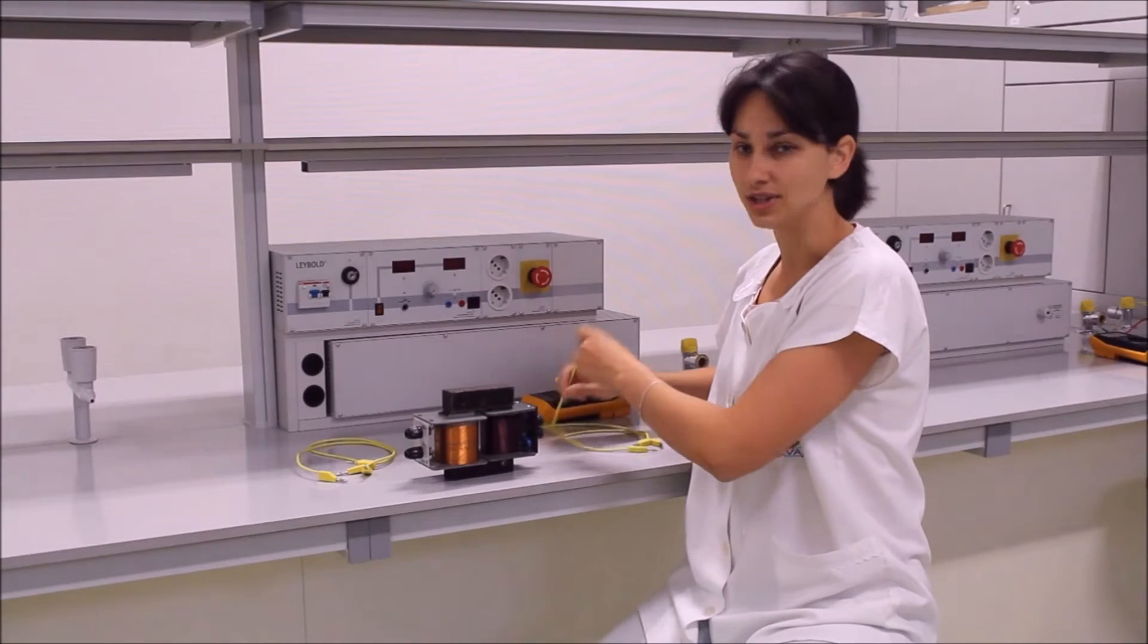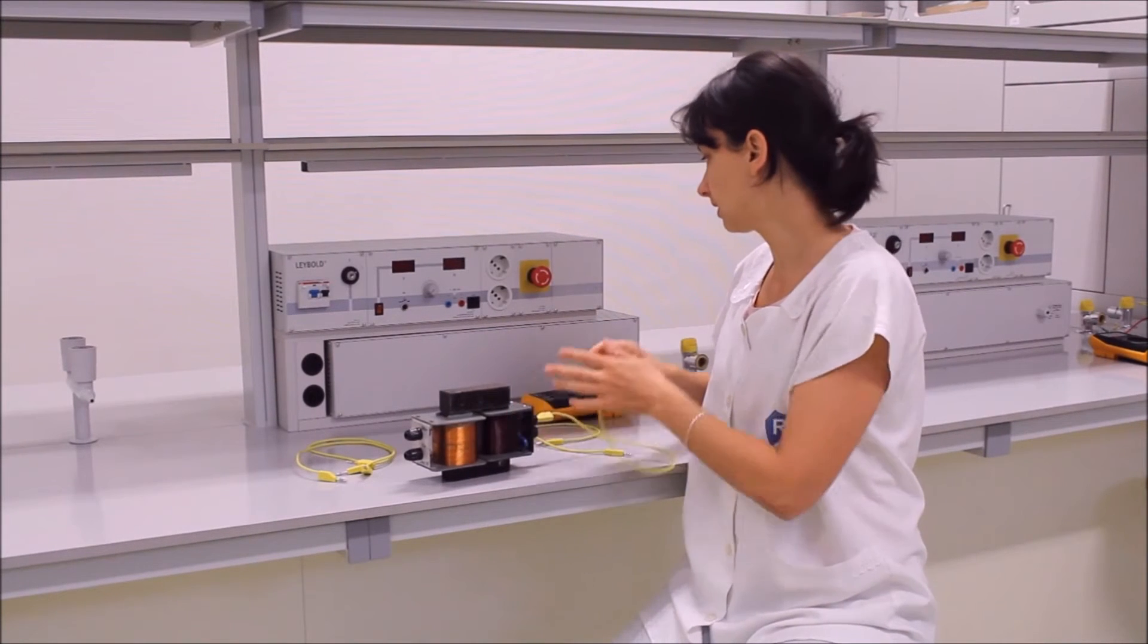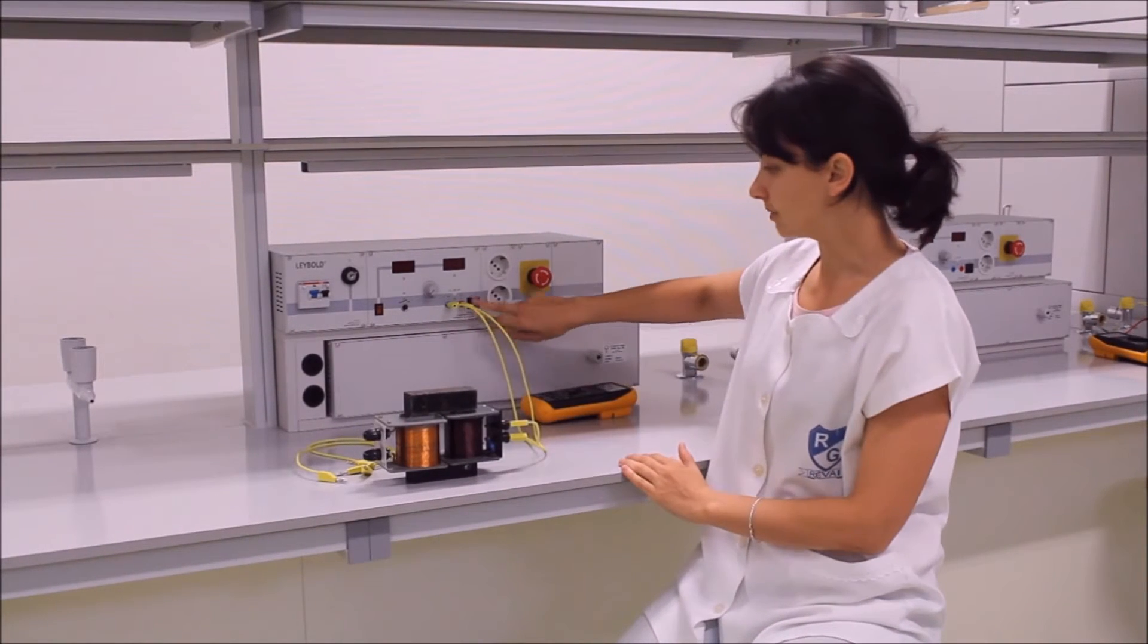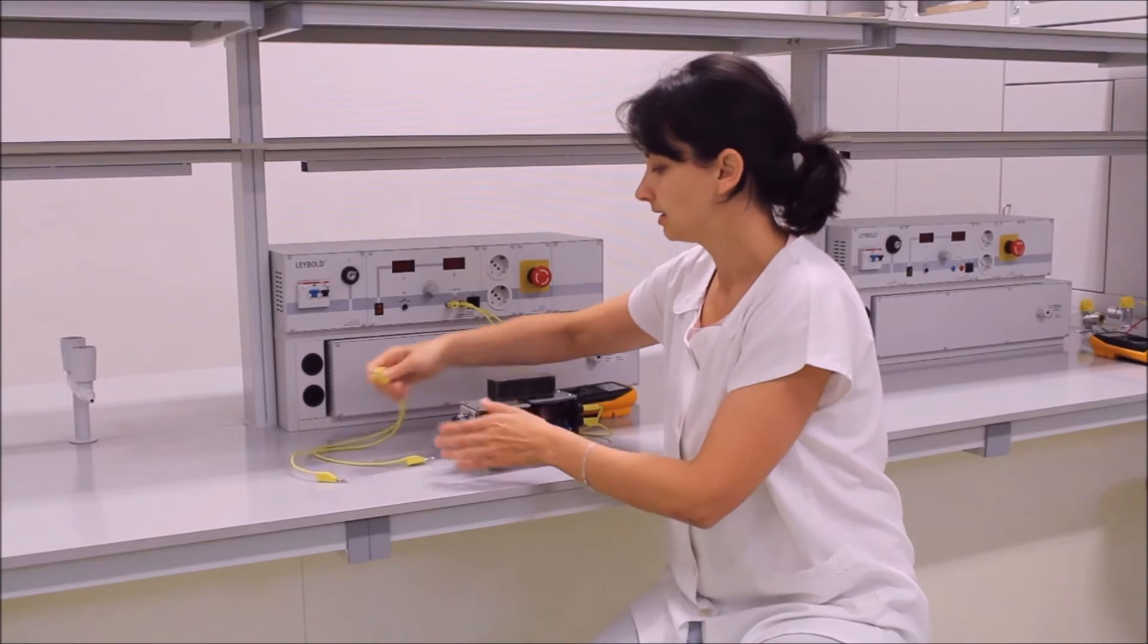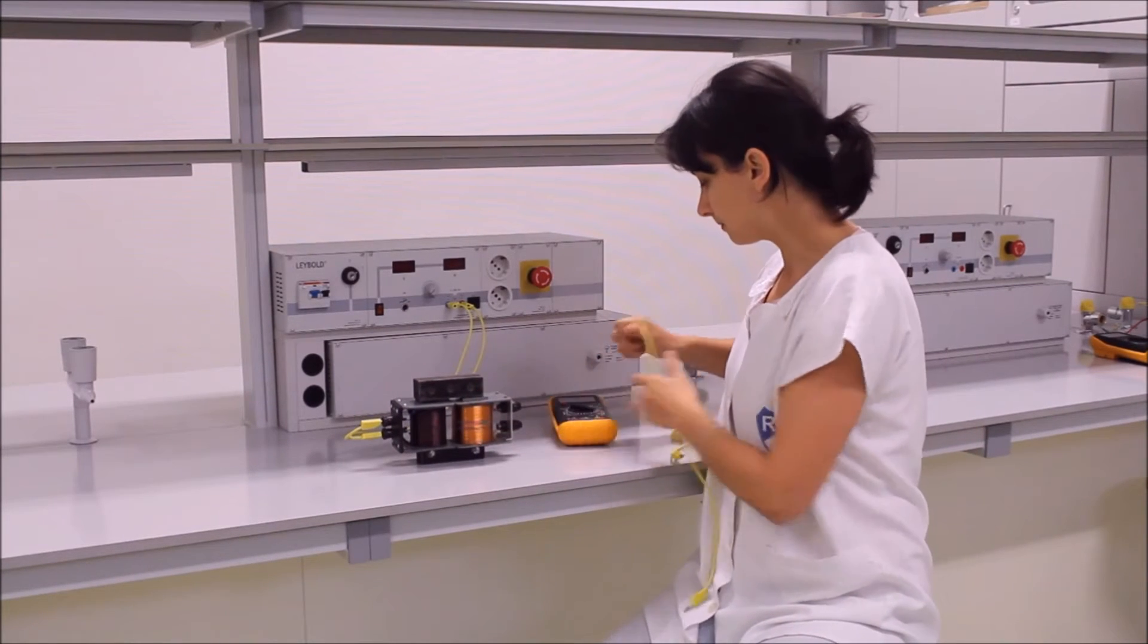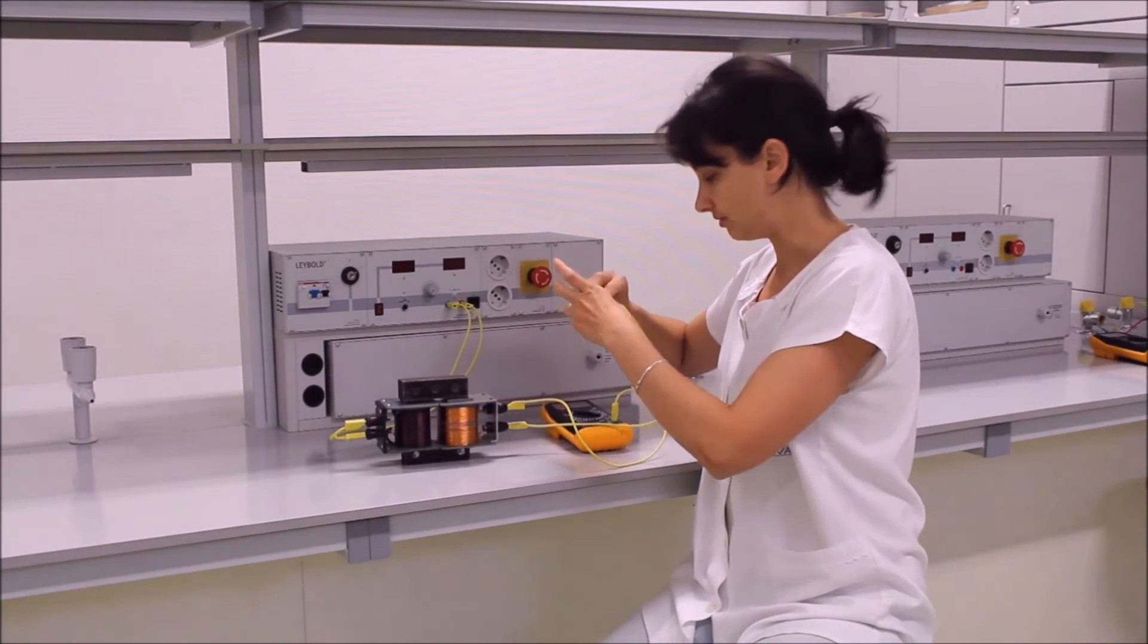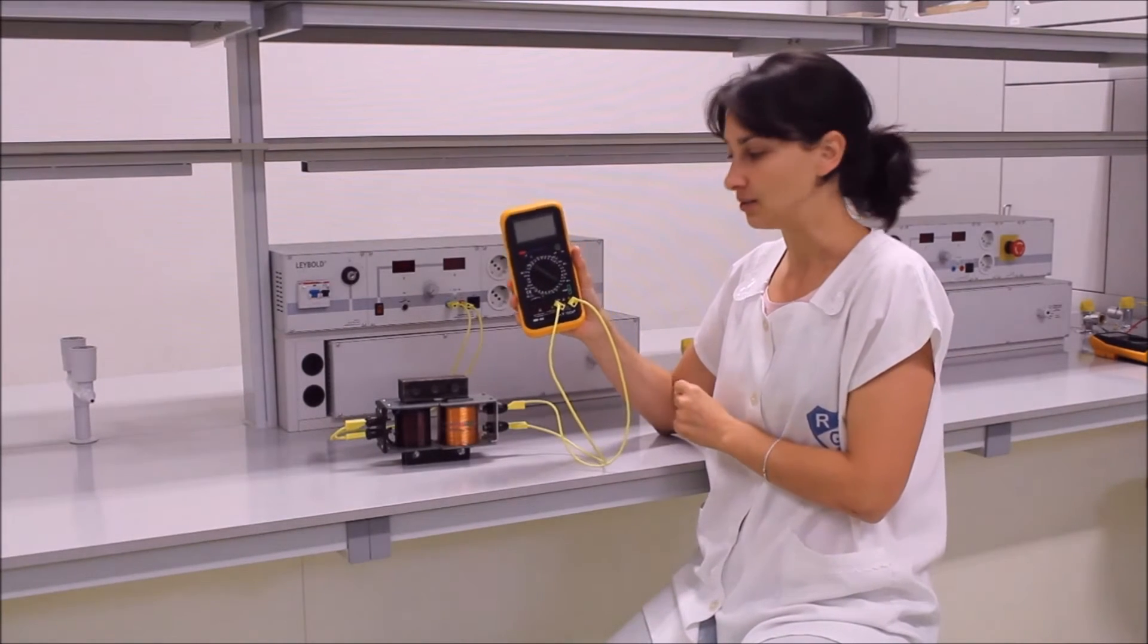A vezetékek segítségével az egyik tekercset a tápegységhez csatlakoztatom. Váltakozó feszültséget fogunk erre a tekercsre kapcsolni, ezért a billenő kapcsolóval átállítottam a váltakozó feszültségre. A másik tekercset pedig a multiméterhez kapcsolom. Feszültséget fogunk vele mérni, váltakozó feszültséget, ezért a multimétert a váltakozó feszültséget mérhető állásban kapcsoltam.